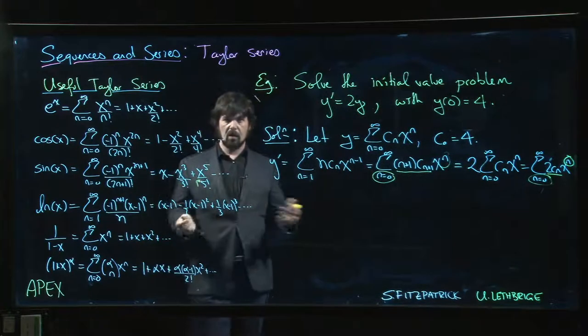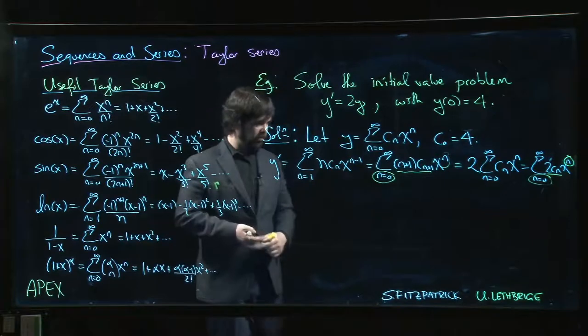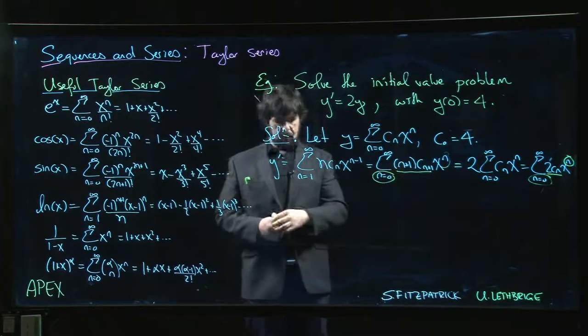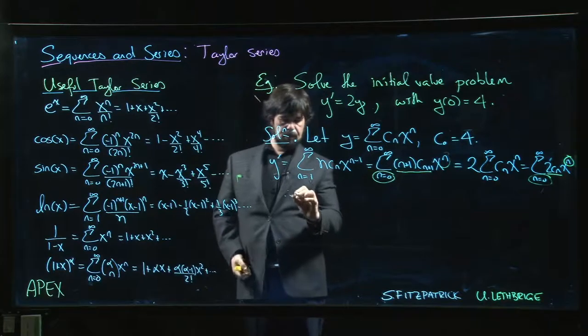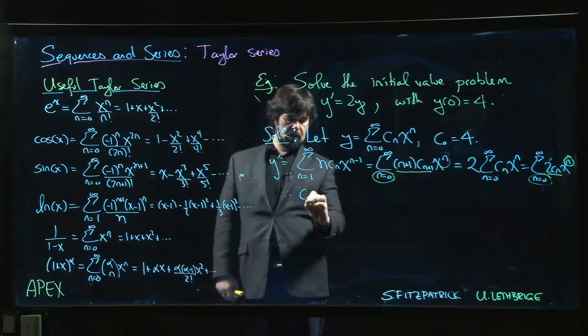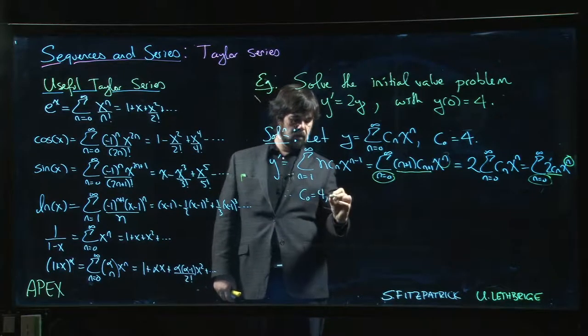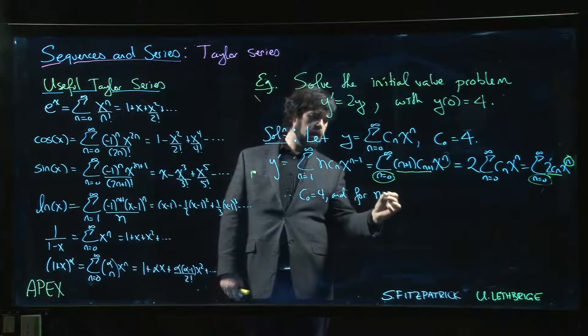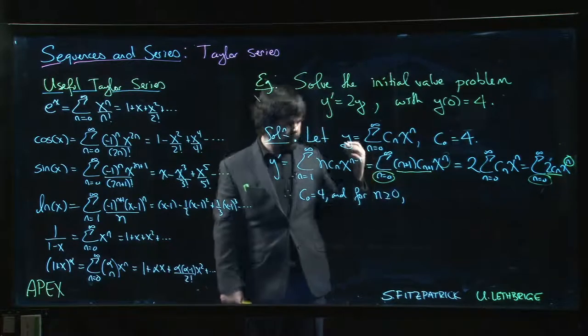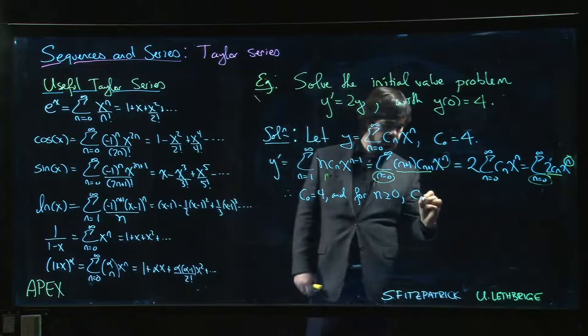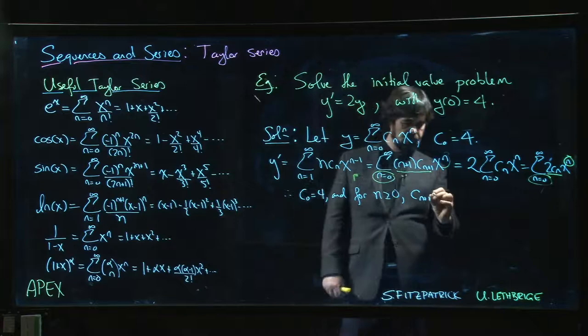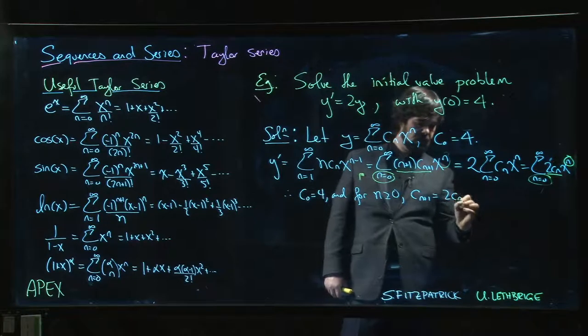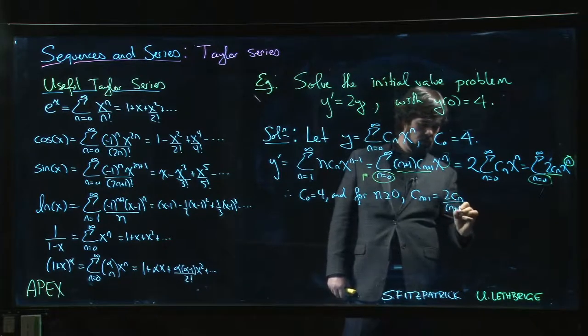Equality of power series means equality of coefficients for each power of x. So from that equality of power series, I can conclude that I know c_0 is equal to 4, and for n bigger than or equal to 0, if I divide by n plus 1, c_(n+1) is going to be 2 c_n over (n+1).